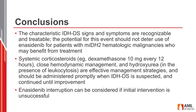In conclusion, the characteristic signs and symptoms of IDHDS are recognizable and treatable. The potential for this event should not deter use of enasidenib when deemed appropriate for patients with IDH2 mutant hematologic malignancies. Effective upfront approaches include systemic corticosteroids — such as dexamethasone at 10 mg every 12 hours until clinical improvement — hydroxyurea in the setting of concurrent leukocytosis, close hemodynamic and fluid management, and conventional approaches to treatment of AML. Corticosteroids should be continued until clinical improvement and then tapered. Enasidenib interruption can be considered if initial intervention is unsuccessful but should not be the first-line approach.